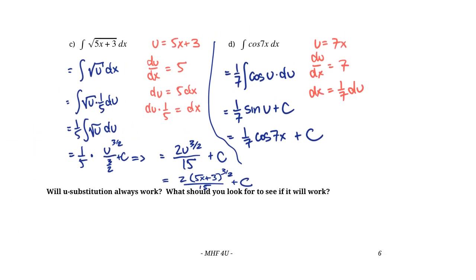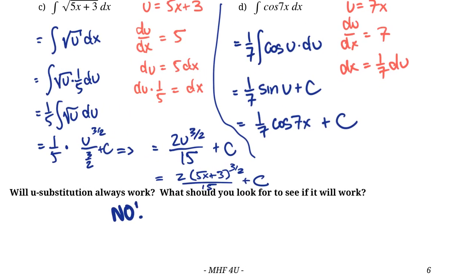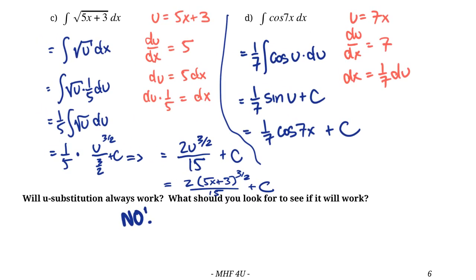So the question is: will u-substitution always work, and what should you look for to see if it will? The answer to the first part is no — it won't always work. Sometimes you'll try it and things won't get easier, and that's when you stop and try something else or try a different substitution. But the things you should look for: essentially look for what looks like the chain rule has been applied — because really what u-substitution is, it's the inverse of the chain rule, the integration version of the chain rule. Look for f(u) times u prime, a function within a function times the derivative of that function.